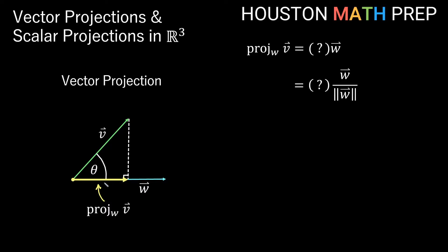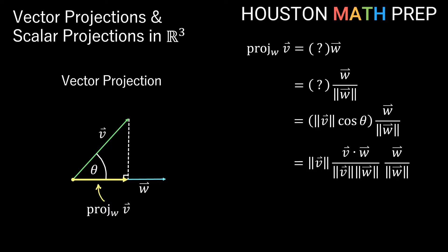The projection vector's length is the horizontal component of vector V — that's the magnitude of V times the cosine of theta, where theta is the angle between the two vectors. We can make this easier to calculate without a calculator. Do you remember another formula for cosine of theta? The cosine of the angle between the vectors equals the dot product divided by the magnitudes of those vectors.